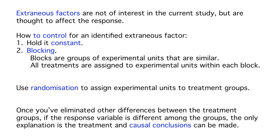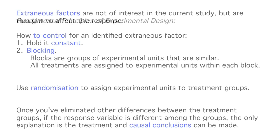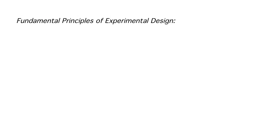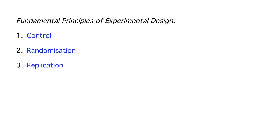There are three fundamental principles of experimental design: control the identified extraneous variables by blocking or holding them constant; randomly assign experimental units to treatment groups; and use replication.